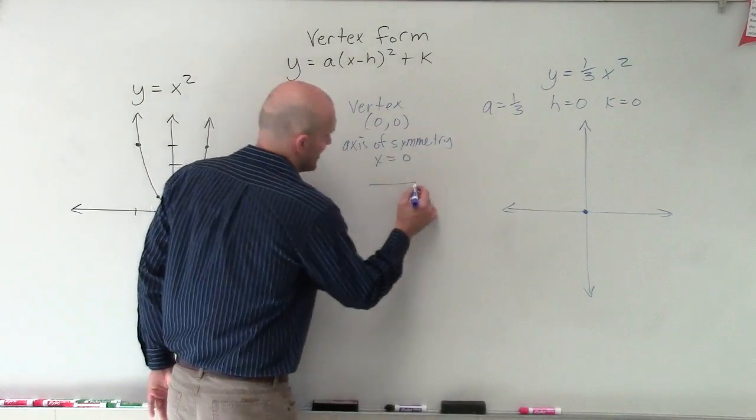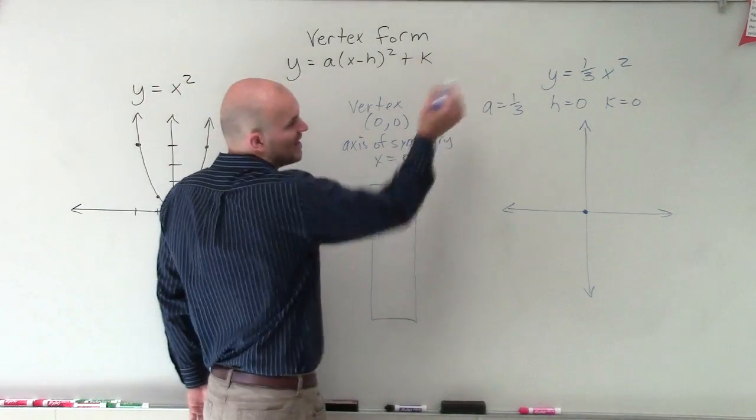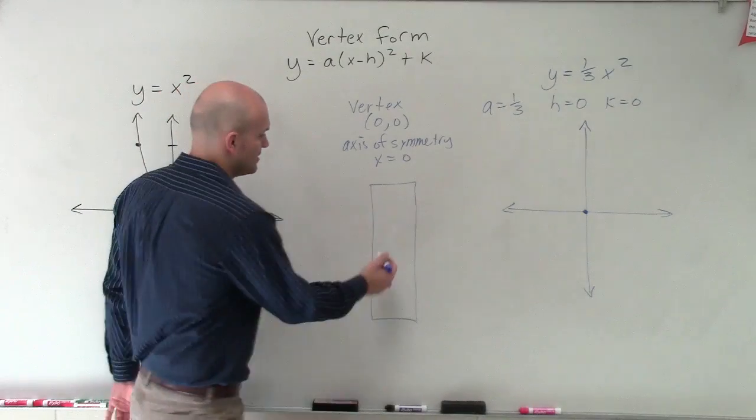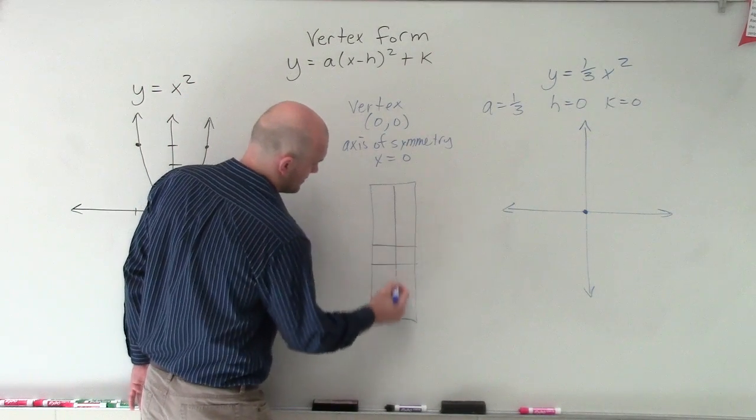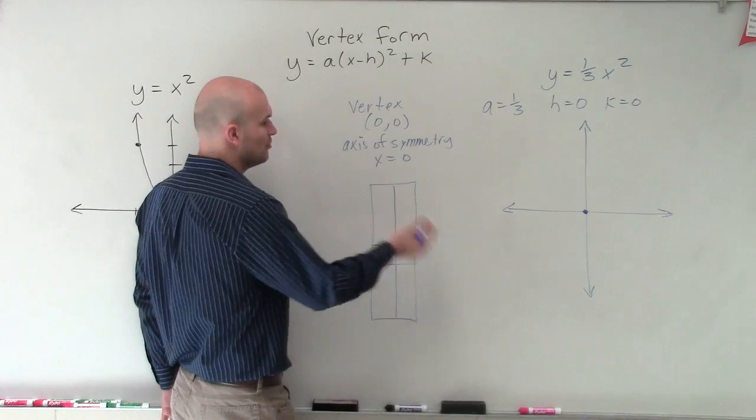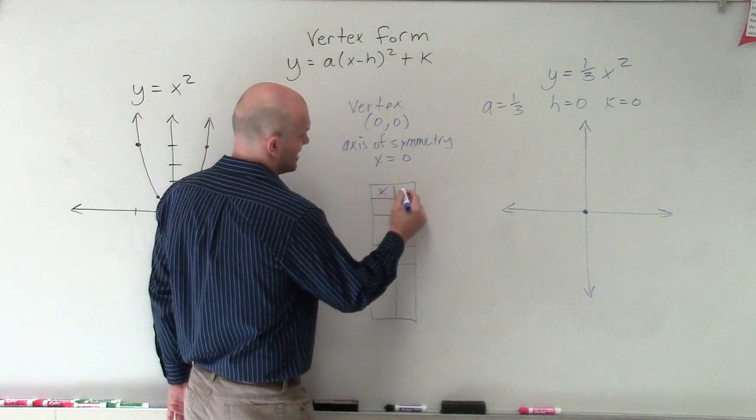So when I'm choosing my values, and again, I'm only going to choose two points to the left and to the right, I'm going to choose values that can be divided by 9. So we know our point 0, that's our axis of symmetry. So I'm just going to pick two points to the left. So here's x, y.